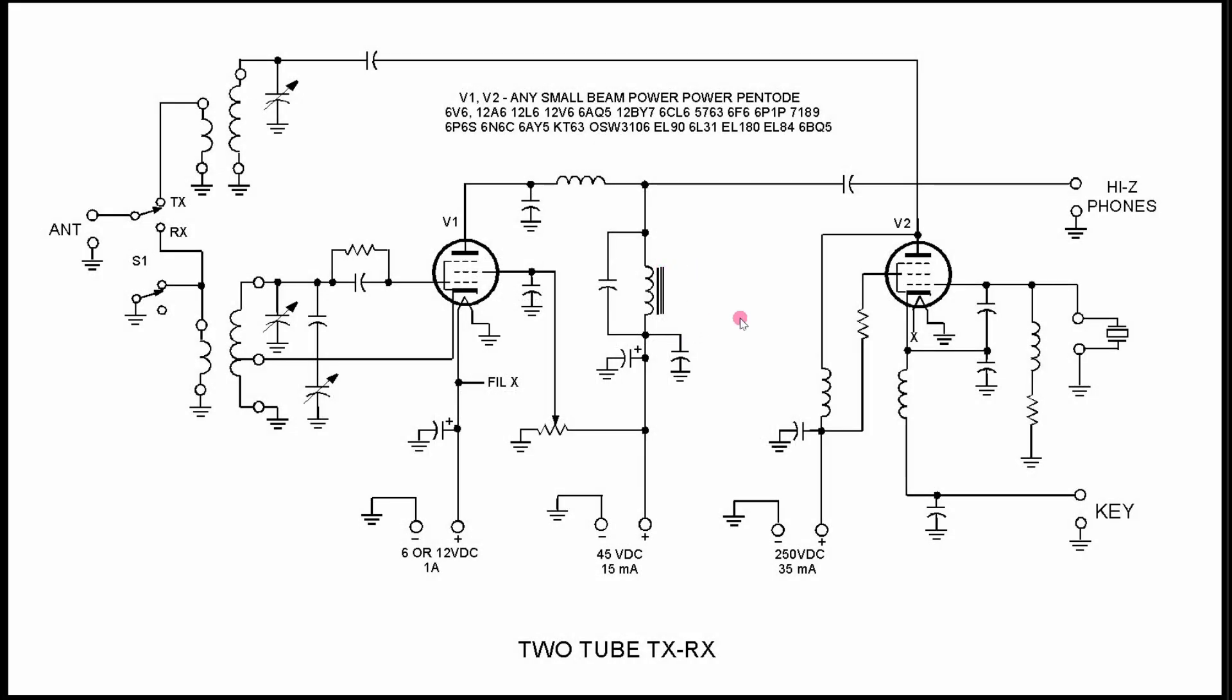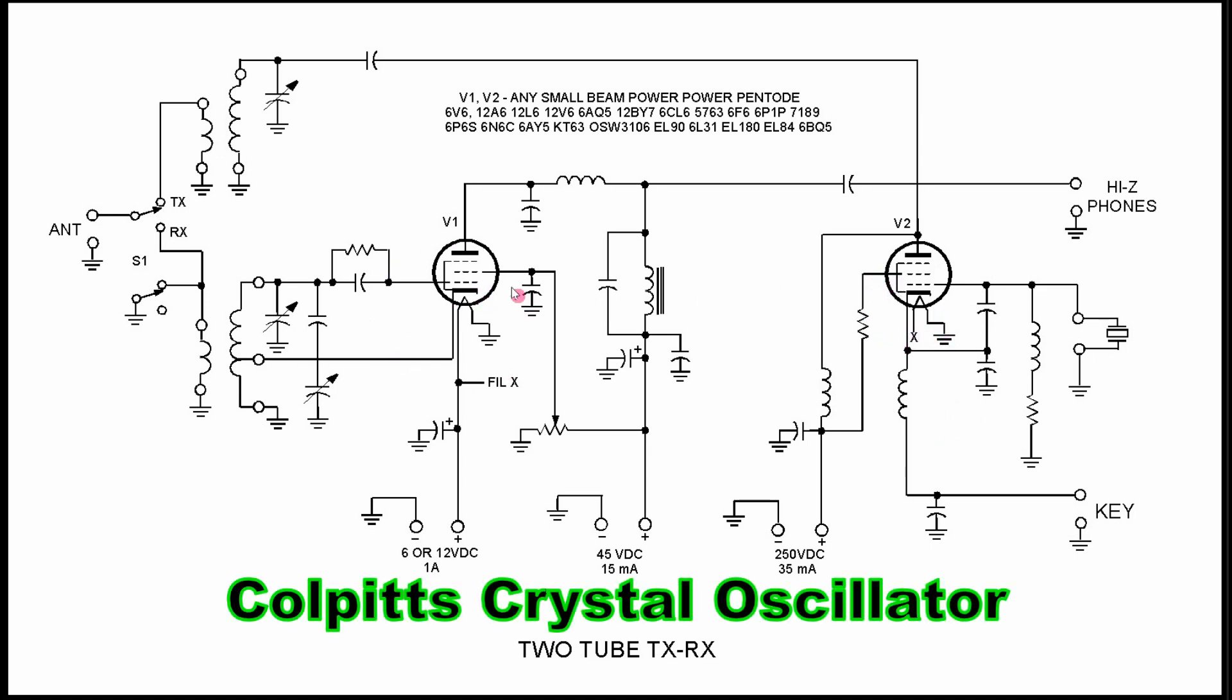So as we get back into KW7T, Dwight's design, I want to show you kind of the bones of it, which is just two tubes. We have two pentodes. And these could be any small beam power pentodes. Everything from a 6V6 to a 6BQ5 could be used in this circuit. The circuit really doesn't care. So all of these are good candidates for a regenerative receiver using the Hartley style and a Colpitts oscillator. We're probably talking about two watts out, maybe three watts if the wind is right. And a fairly sensitive receiver.